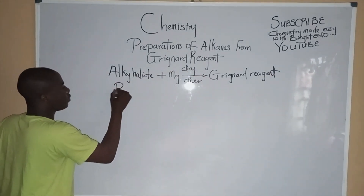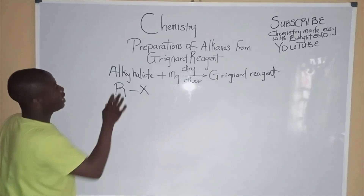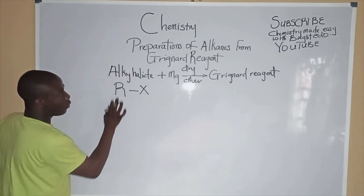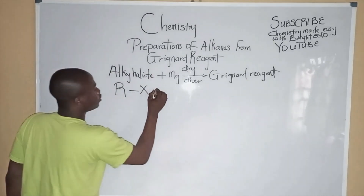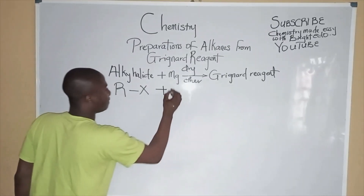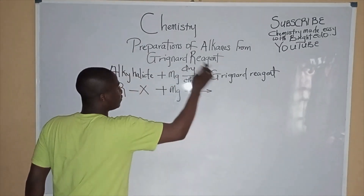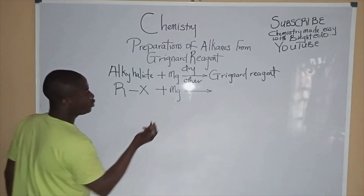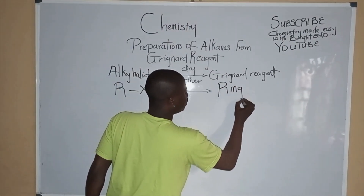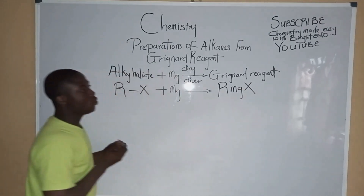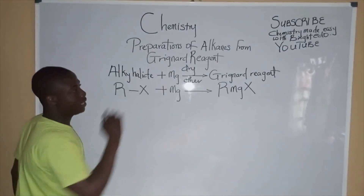This is an alkyl halide — R bonding to X — because R represents an alkyl group while X represents a halogen. Plus magnesium metal in the presence of dry ether, our product becomes R-Mg-X. This is basically the Grignard Reagent.